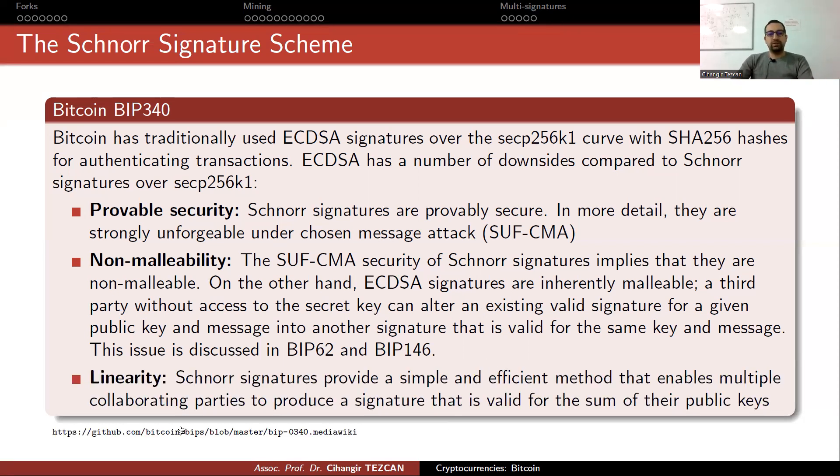But more importantly, we prefer Schnorr signatures because of linearity. Here, signature aggregation comes into play. So Schnorr signatures provide a simple and efficient method that enables multiple collaborating parties to produce a signature that is valid for the sum of their public keys. So instead of the multi-signature protocols that we mentioned before, in the case of elliptic curve digital signature algorithm, if N parties are signing it, you end up with N signatures. Here, you end up with a single signature. This is the nice thing.